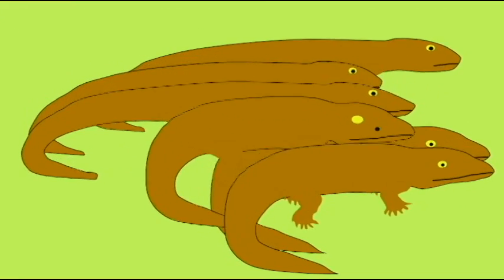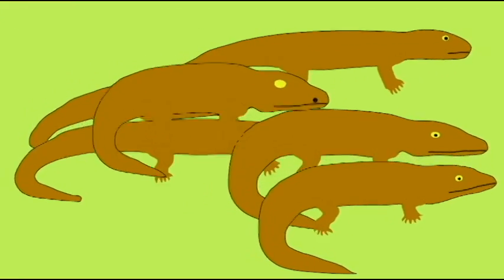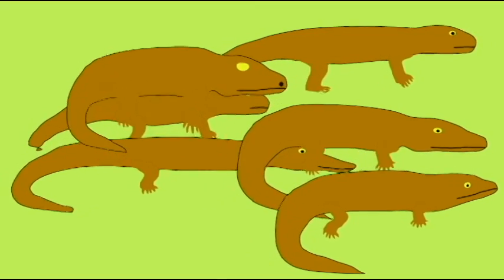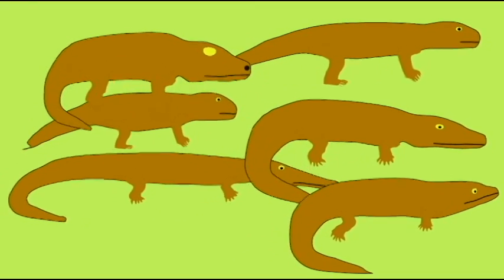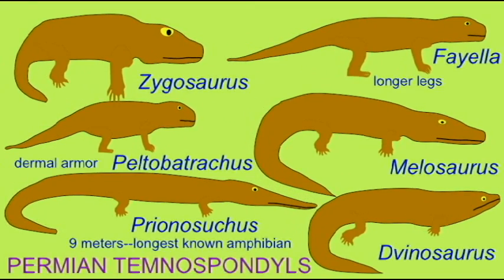The amphibians which belong to the modern groups of frogs, salamanders, and caecilians do not appear for well over a hundred million years after the first amphibians are known in the fossil record.